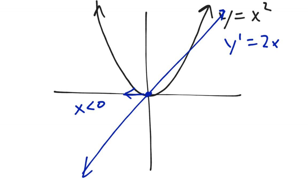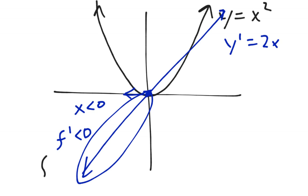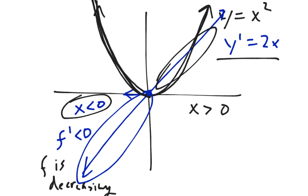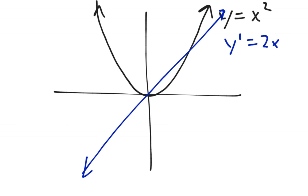Notice a couple things. If x is less than zero, then f prime is less than zero, which means that f is decreasing. We can see that on the graph because if x is less than zero, f is always decreasing in that interval. Once y prime becomes positive for x greater than zero, f turns around and f starts increasing on that interval.